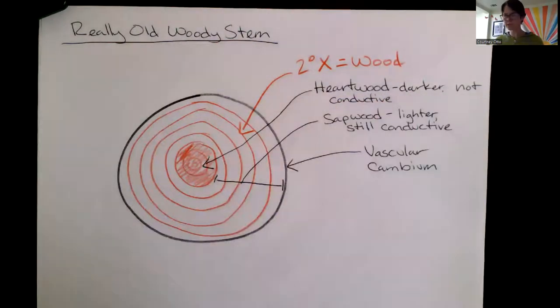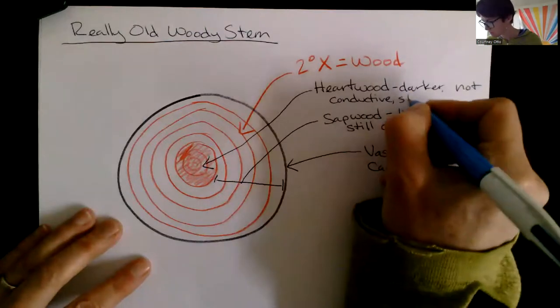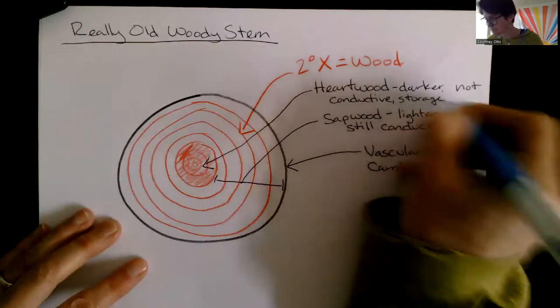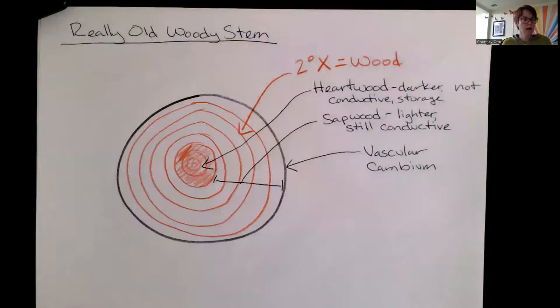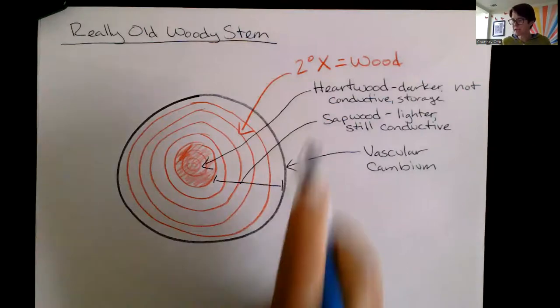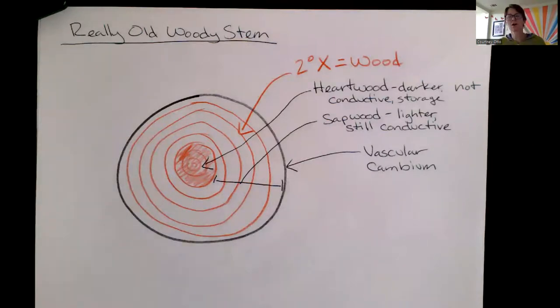Instead it serves more of a storage function, right? Sometimes trees will dump toxins there too. Both our sapwood and our heartwood are these strong xylem cells that also provide a lot of structural integrity, a lot of strength for the tree.